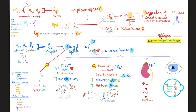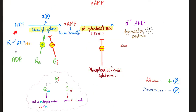Here is the story of GQ. Here is the story of Gs with adenylate cyclase, ATP, and cyclic AMP. Gi is the exact opposite of Gs — I is inhibitory, S is stimulatory of adenylate cyclase. Adenylate cyclase converts ATP to cyclic AMP. And phosphodiesterase degrades cyclic AMP into inactive pieces.